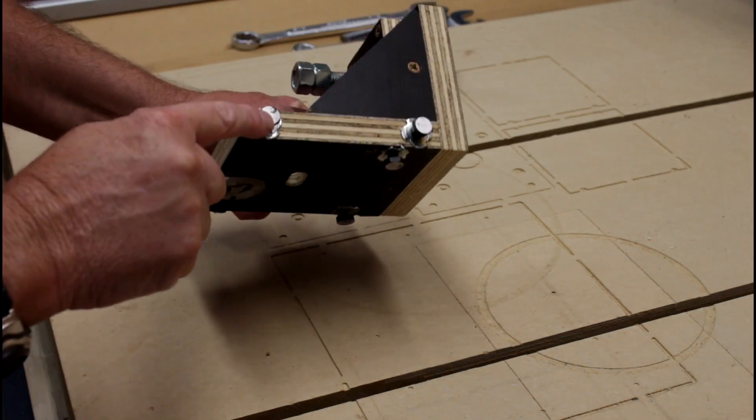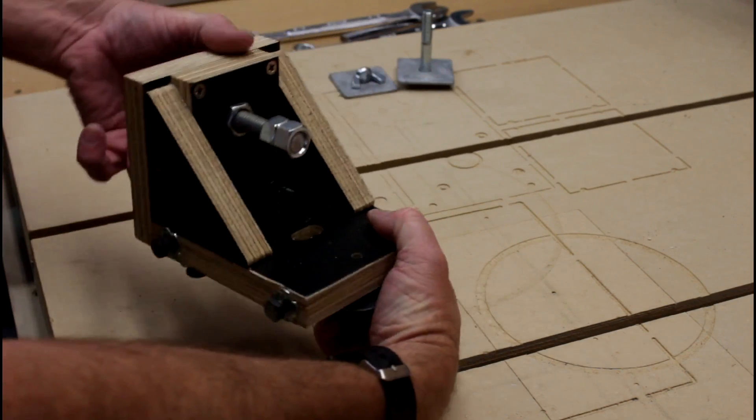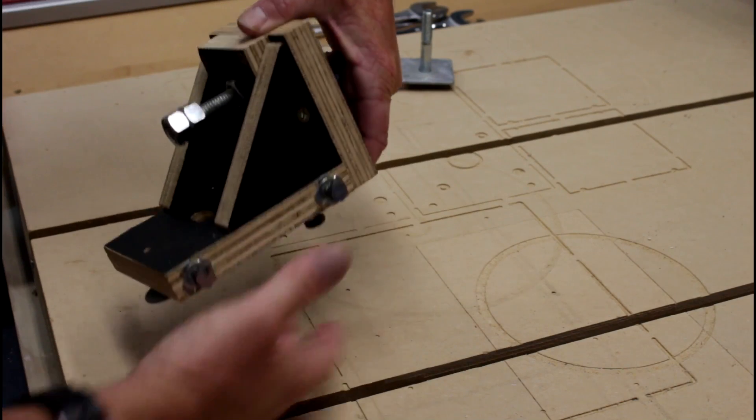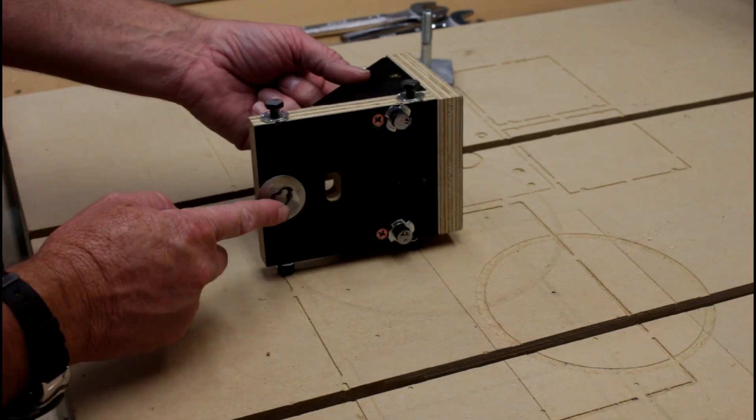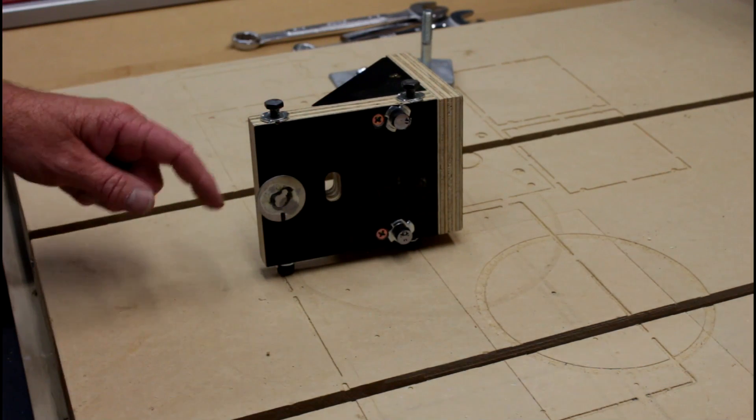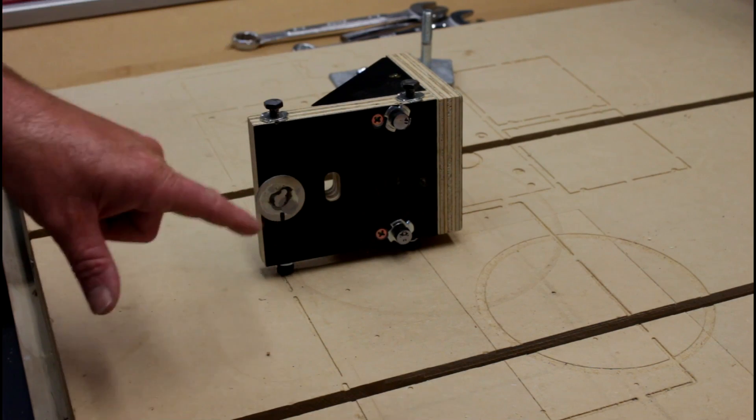Now that we've got the T-nuts in, let's have a look at these bolts here. There are two on each side and three underneath. Now you notice the one underneath here has been modified. I've actually welded a washer to the bottom of it. But don't worry about it.